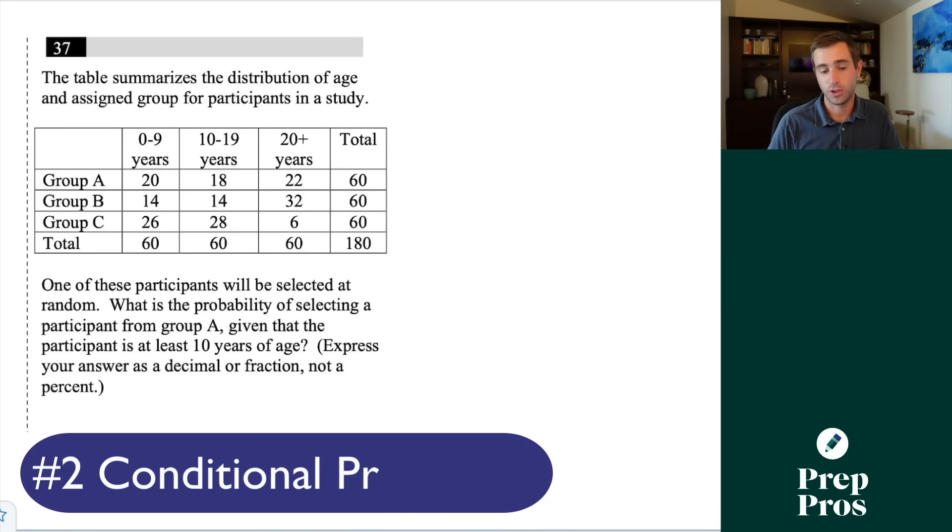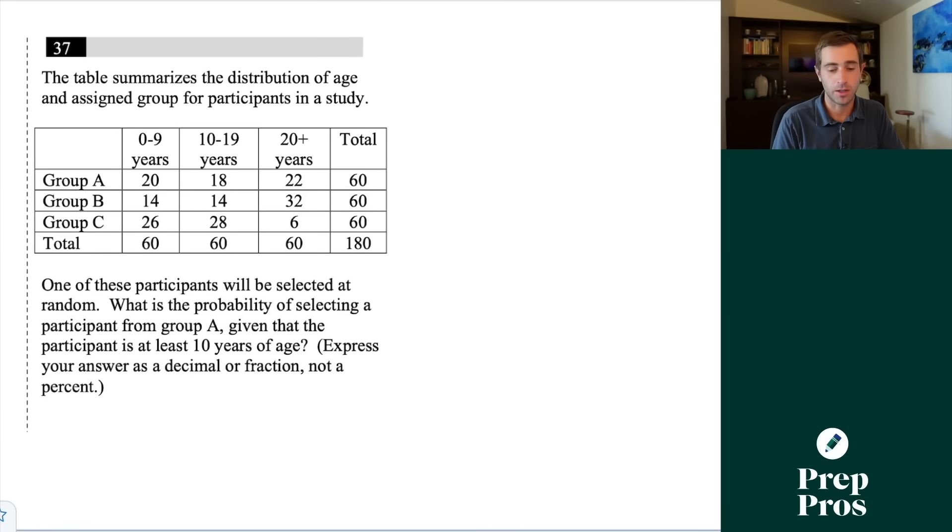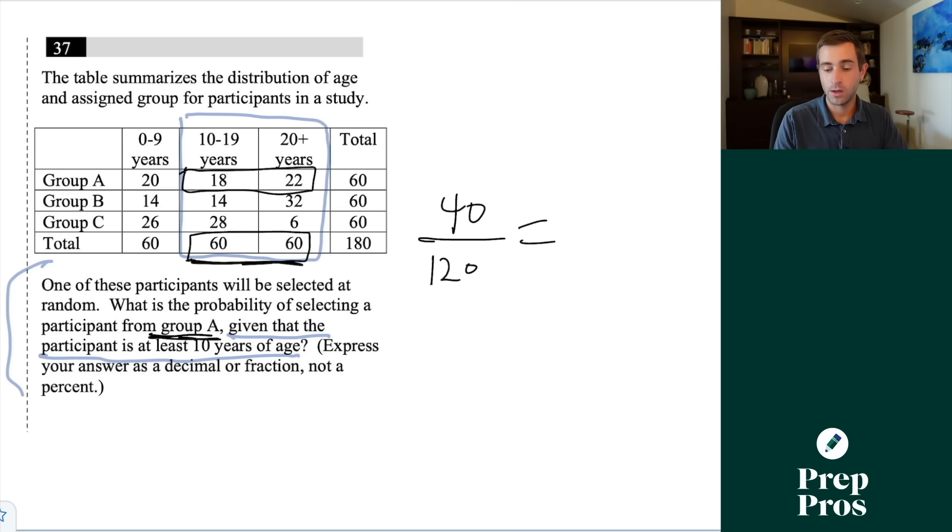The next thing you're going to see on your SAT is conditional probability with probability tables. There were two of these on the August SAT. Here one participant will be selected at random. What is the probability of selecting a participant from group A, given that the participant is at least 10 years of age? We're always looking for our condition or restriction in these tables. When you see this 'given' statement, it restricts you to part of the table. Given the participant is at least 10 years of age, we can only look at this part of the table. The group A people who are at least 10 years of age is 18 plus 22, which is 40. Our total people who are at least 10 years of age is 120. So our answer is 40 over 120, or one over three.